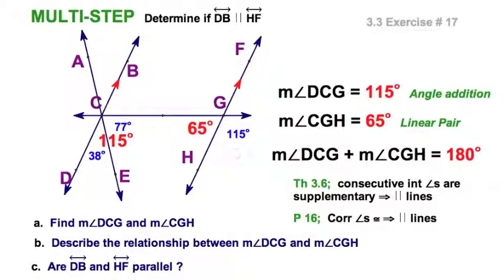Now, interestingly enough, I could have just as well used 115 here and its corresponding angle as well. But this multi-step problem wanted us to find these two. So, there you have it. The lines are parallel.